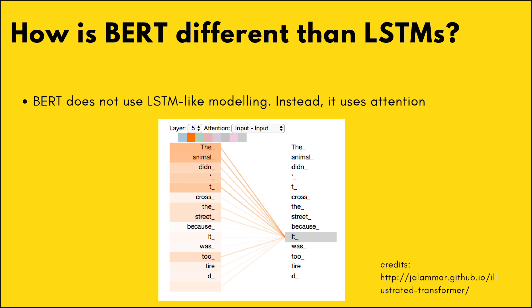BERT is not like LSTMs — it does not use sequence modeling. Instead, it uses something called attention. As you can see in the figure, on the right column of the word, there are several lines connecting to the words on the left column. These lines are the attention weights. The top rows in the left column — words like 'the', 'animal', 'didn't' — are darker compared to the bottom words, because BERT is paying more attention to those words. That's how attention works.